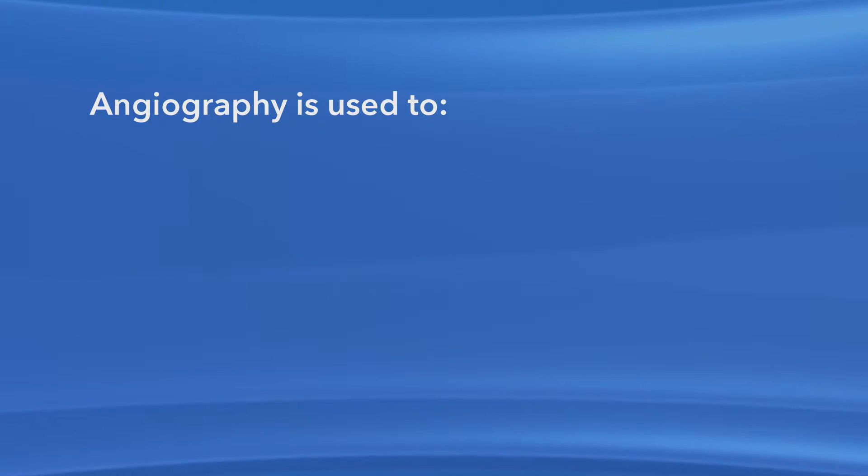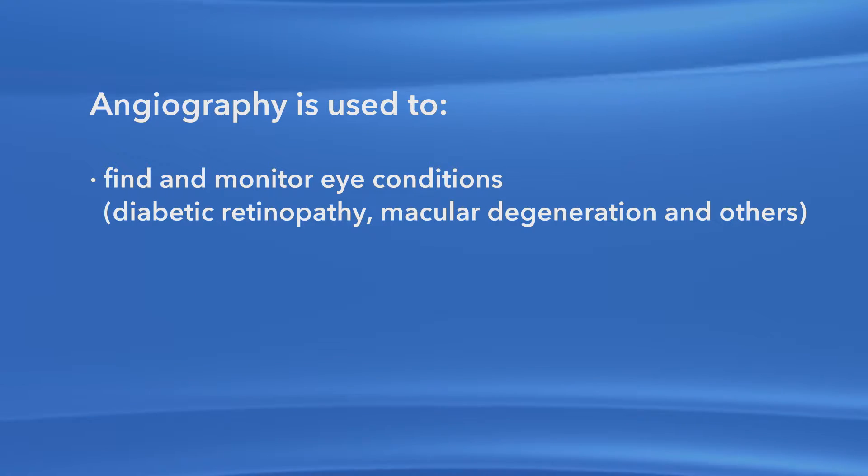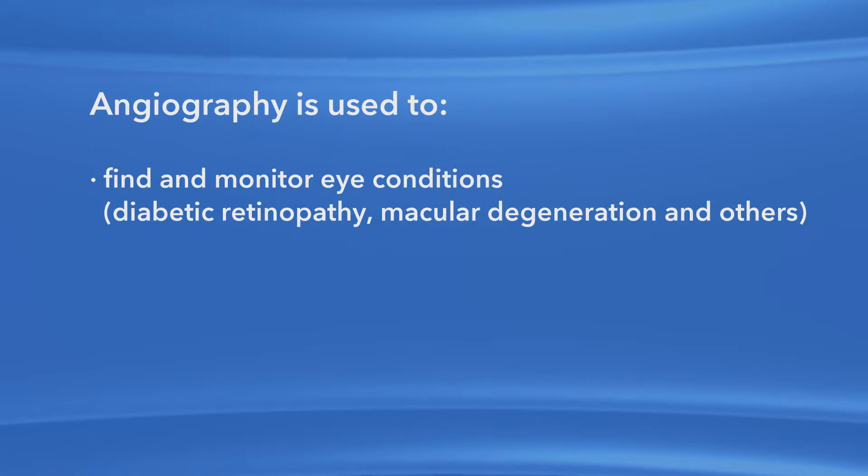When you visit your ophthalmologist, he or she may need to take special photographs of your retina, the light-sensitive layer of cells lining the back of your eye. The retina is responsible for detecting light, which in turn allows you to see. The process of taking photos of the back of your eye is called angiography. Angiography helps your ophthalmologist see what is happening in the retina or in the blood vessels under the retina, called the choroid. Ophthalmologists use angiography to help diagnose and monitor certain eye conditions, such as diabetic retinopathy and macular degeneration, among others.